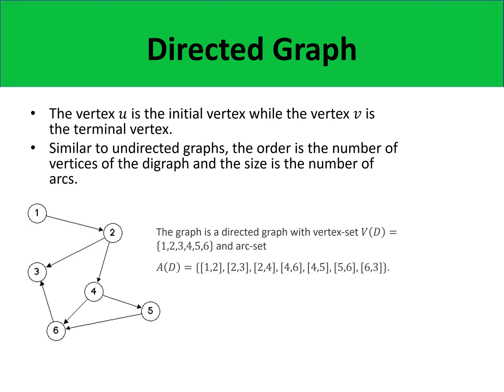Similar to undirected graphs, the order and size of a directed graph are the number of vertices and the number of arcs, respectively. Consider the directed graph on your screens: it has vertex set {1, 2, 3, 4, 5, 6} so its order is 6. The arcs of the graph are [1,2], [2,3], [2,4], [4,5], [5,6], and [6,3]. Note that in directed graphs, we cannot interchange the pairs of numbers — that is why the arcs are labeled as ordered pairs.